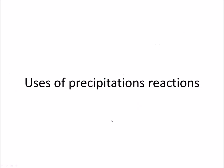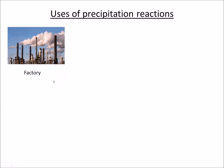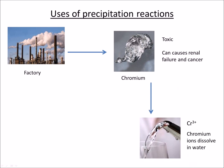Now there are plenty of uses of precipitation reactions, and one such use is in water purification systems. Sometimes factories could dispose of heavy metals in an incorrect manner, or there might be an accident, and therefore these heavy metals such as chromium can leach into the environment and contaminate our water supplies. Chromium is very toxic, especially in high concentrations — it can cause renal failure and cancer. So we want to get rid of chromium ions dissolved in a contaminated water sample, and the way to do that is by forming chromium hydroxide.